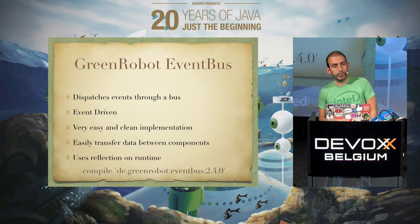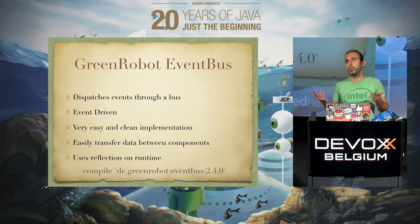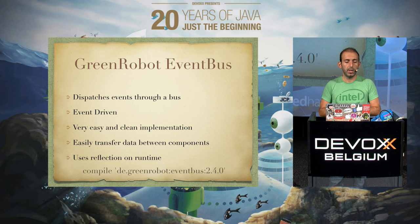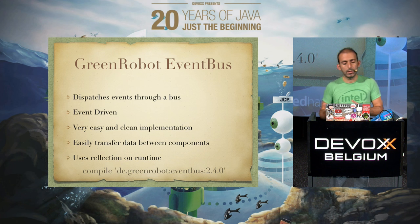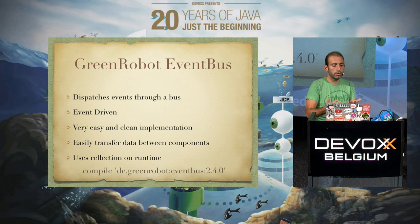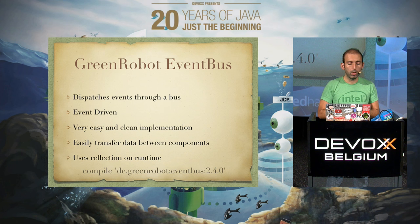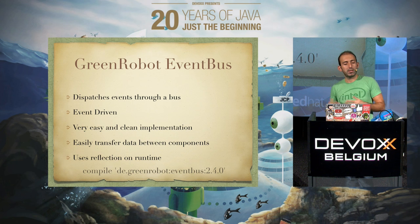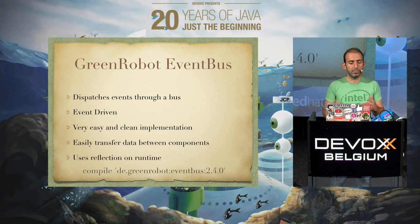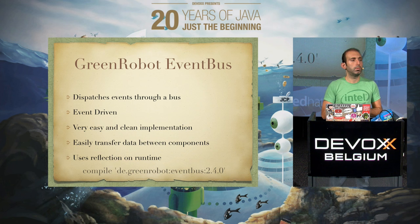Next topic: event buses. If you've done any development with functional and event-based languages, you probably enjoy that style, which Android and Java don't really work in. This might be one of my favorite libraries — I tend to use GreenRobot EventBus in almost all projects. Basically it dispatches events through a bus which subscribers can be notified of when an event is fired. It's event-driven, very easy and clean to integrate and implement.